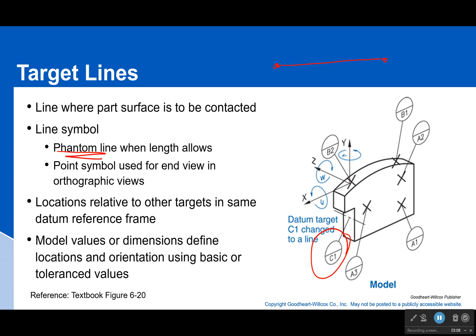When we're drawing this line, we use a phantom line. That is a line: long, two shorts, and then long, long, two shorts, long. You do not use long-short-long—that's a center line, that's saying there's an axis there, which isn't true. You don't use a solid line, you don't use a hidden line, because all those are telling different things that aren't actually there.